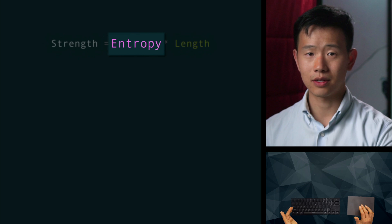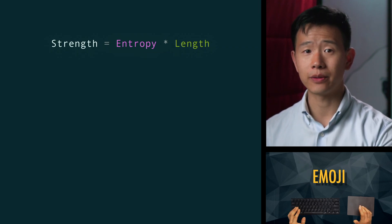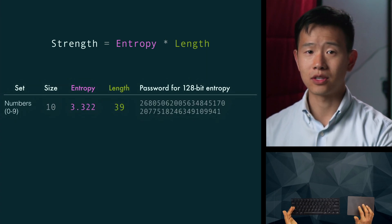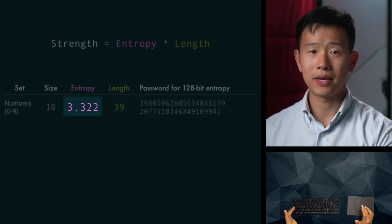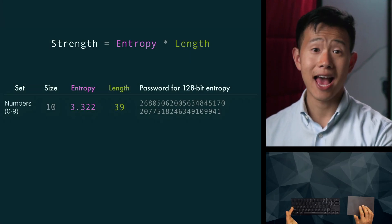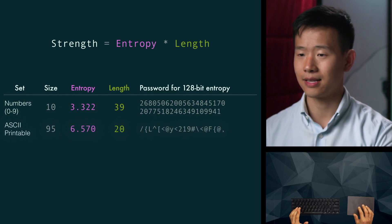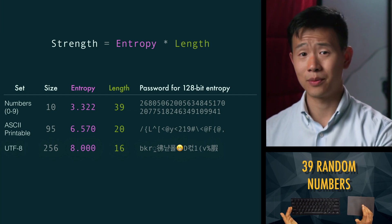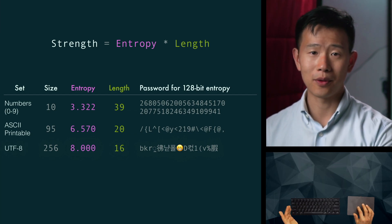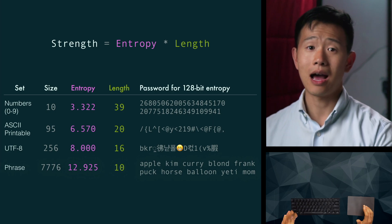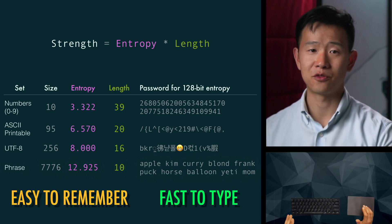Password strength is its length multiplied by the entropy per symbol used. A symbol could be a character, word, or emoji. The entropy per symbol depends on the size of the set it comes from. For example, a set of numbers 0 through 9 has 3.3 bits per symbol — you'd need 39 random numbers to achieve 128 bits of strength. As you increase the set sizes to include more possibilities like ASCII or Unicode, the length requirement decreases. For most people, memorizing a phrase of words is much easier because you can mentally associate between them.